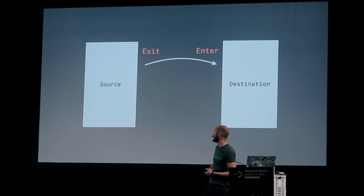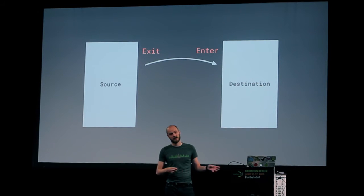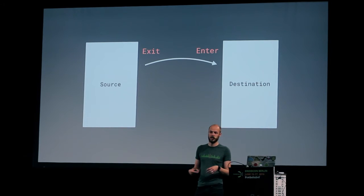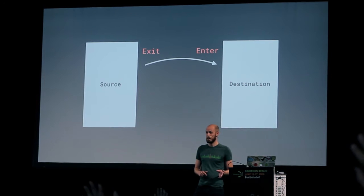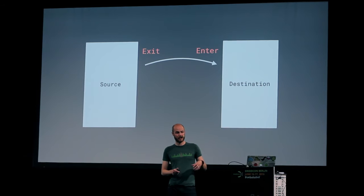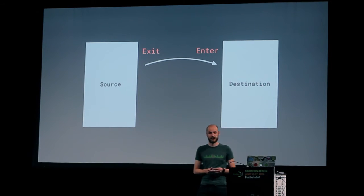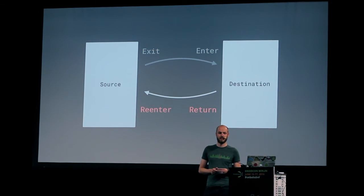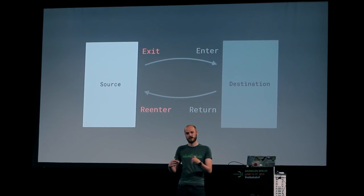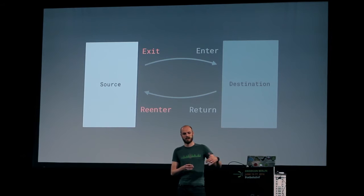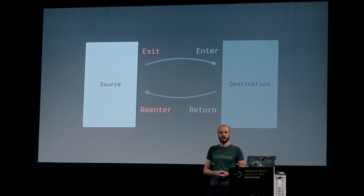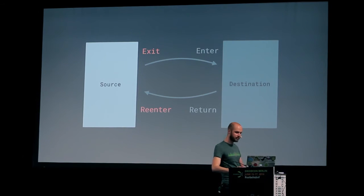Talking about scenes, there are a couple of things within activity transitions. There are exit and enter callbacks you can set — window exit, window enter, shared element enter, shared element exit. You might have noticed that for shared element transitions, you have only an enter and an exit transition. There's another pair: return and reenter. If you don't set these, the exit transition on the way back will become the reenter transition. But you can do different transitions on each and every type if you want.